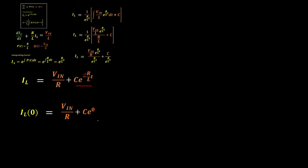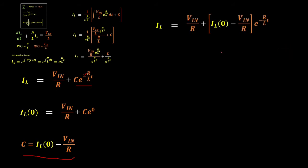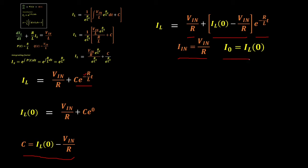Substituting back the value of our constant C, we have the inductor current equal to VIN/R plus the quantity [I(0) − VIN/R] multiplied by e raised to −(R/L)·t. This is the general equation for the current through the inductor and resistor of a series RL circuit. For convenience, let I_IN = VIN/R and I_0 = I(0).